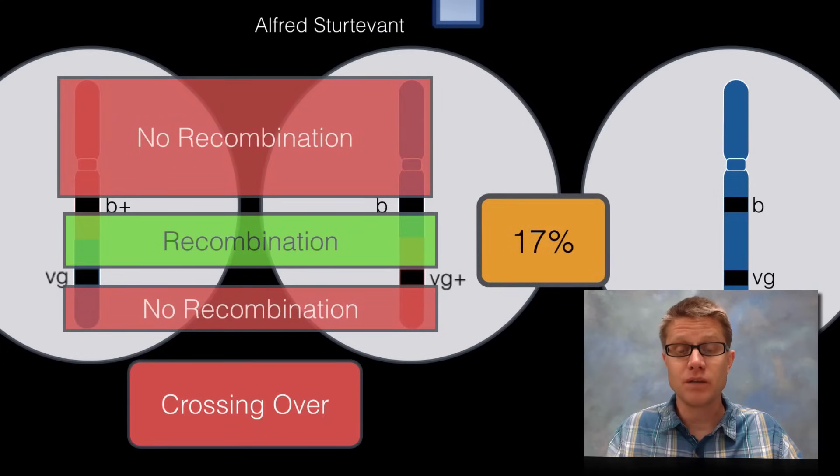But if it doesn't occur in that part of the chromosome there's going to be no recombination. So where does that 17% come from? Well this is roughly 17% of that area of the chromosome, that's where it's coming from. If those genes were closer together that frequency recombination would be closer. If they were really far apart it's more likely that it's going to split in the middle.